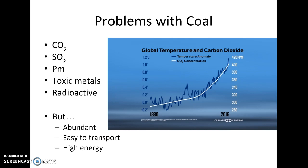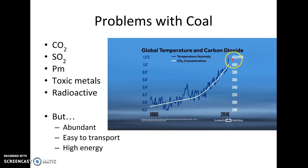Some of the problems with coal include the pollution it creates. One of the biggest is carbon dioxide. This graphic shows a relationship between CO2 and temperature — the blue zigzag line is temperature and the other line is the concentration of CO2 in our atmosphere. From about the time of the Industrial Revolution, levels of CO2 have increased greatly, surpassing 410 ppm as of 2018 — levels this world has never seen before. The overall trend in geologic history has been that as CO2 increases, so does temperature.